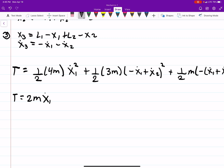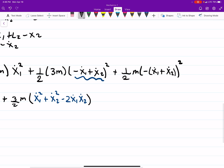So now we can try to simplify this a little bit. This is obviously going to get us just 2m x1 dot squared, plus 3 over 2m. I'm going to go ahead and expand this part. So that will give us x1 dot squared, plus x2 dot squared, minus 2 x1 dot x2 dot. You can expand that if you don't believe me, but I'm just going to kind of move through it really fast.